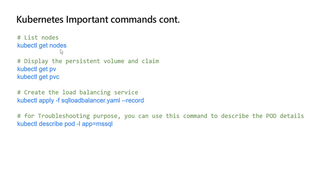kubectl get nodes lists all the nodes in the cluster. kubectl get pv displays the persistent volume information and kubectl get pvc displays the persistent volume claim information. kubectl apply manages the application through YML files, creating and updating resources in the cluster. We will be using this command to create the SQL load balancer service, deploy the SQL Server, and deploy the storage classes. The kubectl describe command describes information about the pod and is very helpful for troubleshooting - if you want to understand the configuration of a running pod, you describe the pod and it will display that configuration.